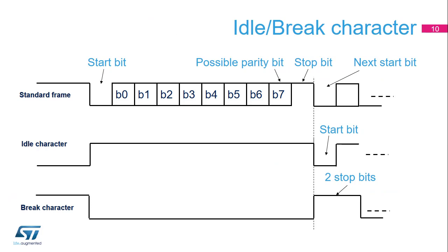The standard frame was described in the previous slide. This slide shows an example of 8-bit data frames configured with one stop bit. An idle character is interpreted as an entire frame of 1s; the number of 1s will include the number of stop bits. A break character is interpreted on receiving 0 for a frame period. At the end of the break frame, two stop bits are inserted.